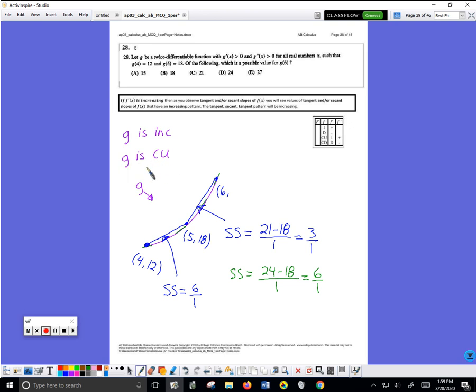Because the secants have to increase. If the point here has a y coordinate of 27, everything works. So this is a rare occasion where you do have to look at the answers in order to solve the problem.